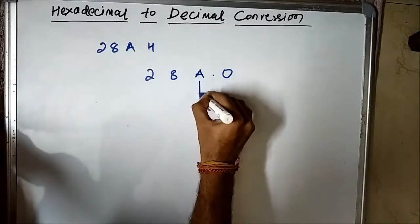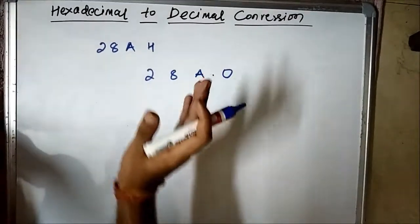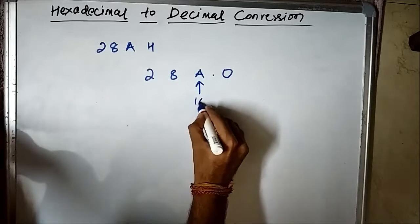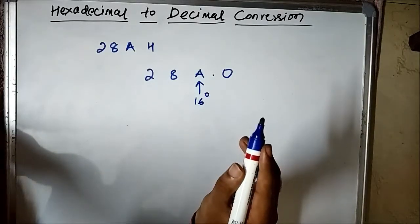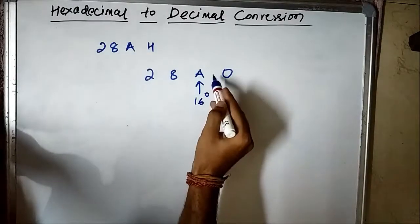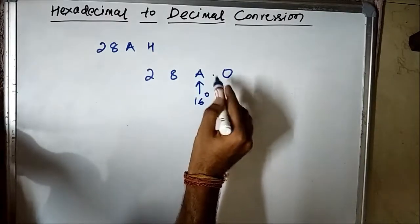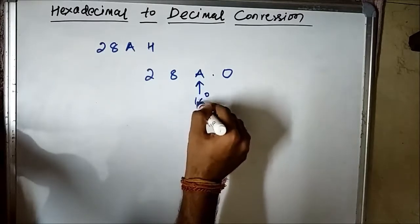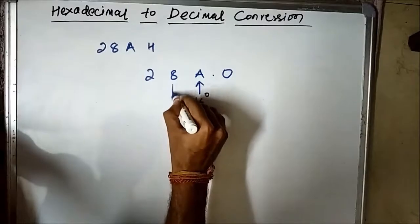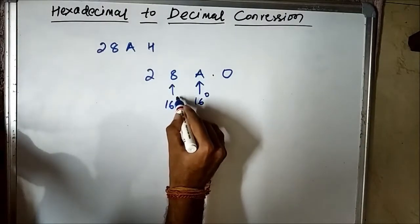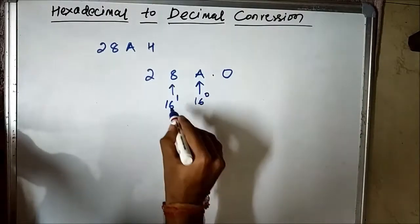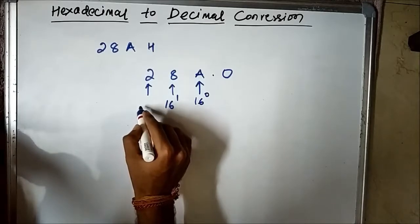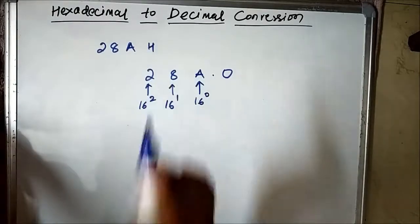The symbol A, which equals 10, has a weight value of 16 to the power 0. Just to the left of the point, the weight value starts from power 0 — the power of the base or radix starts from 0. Next, 8 has a weight value of 16 to the power 1, and 2 has a weight value of 16 to the power 2.